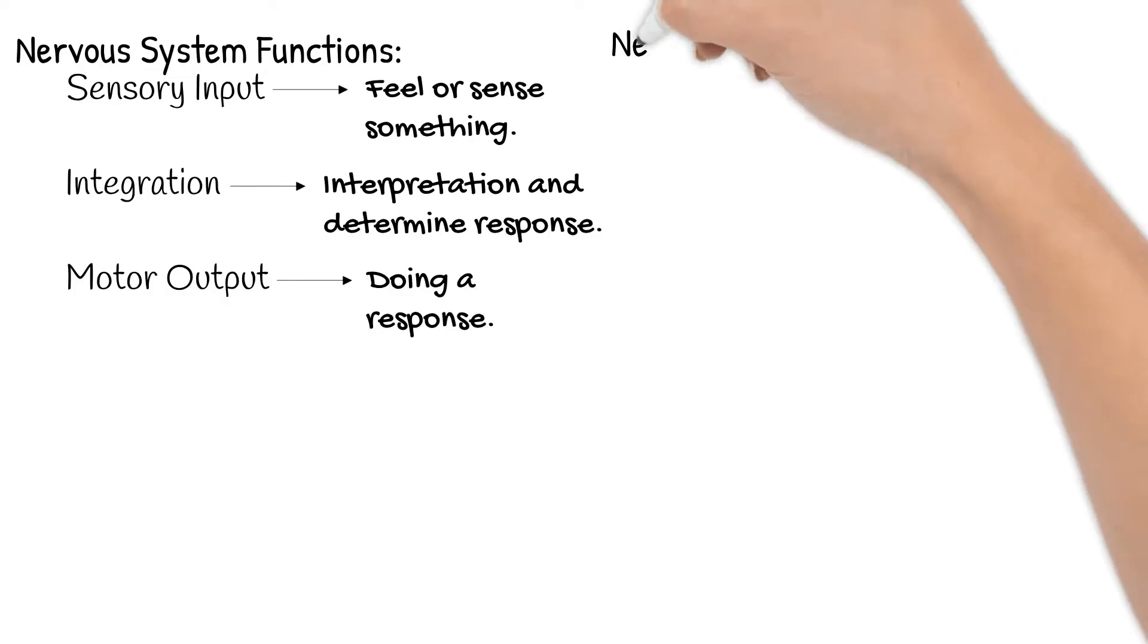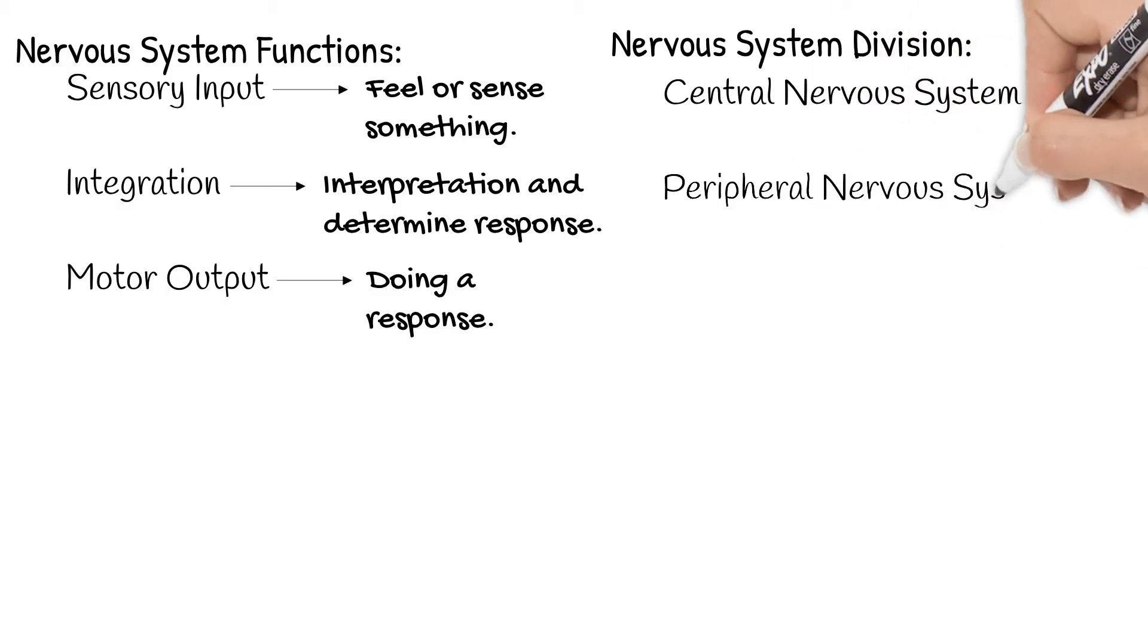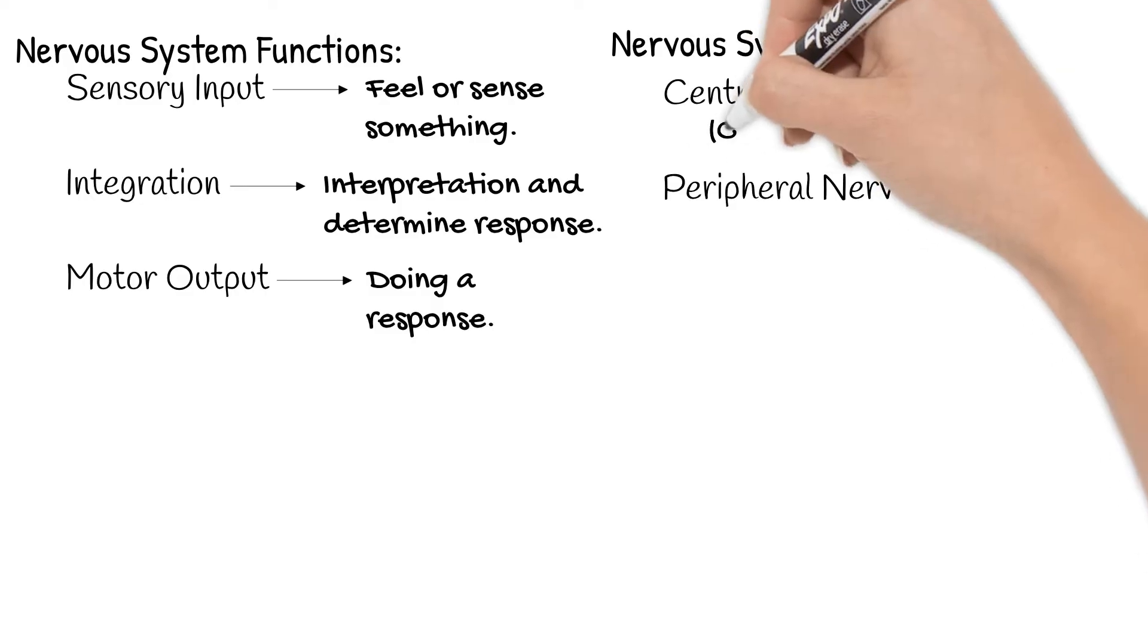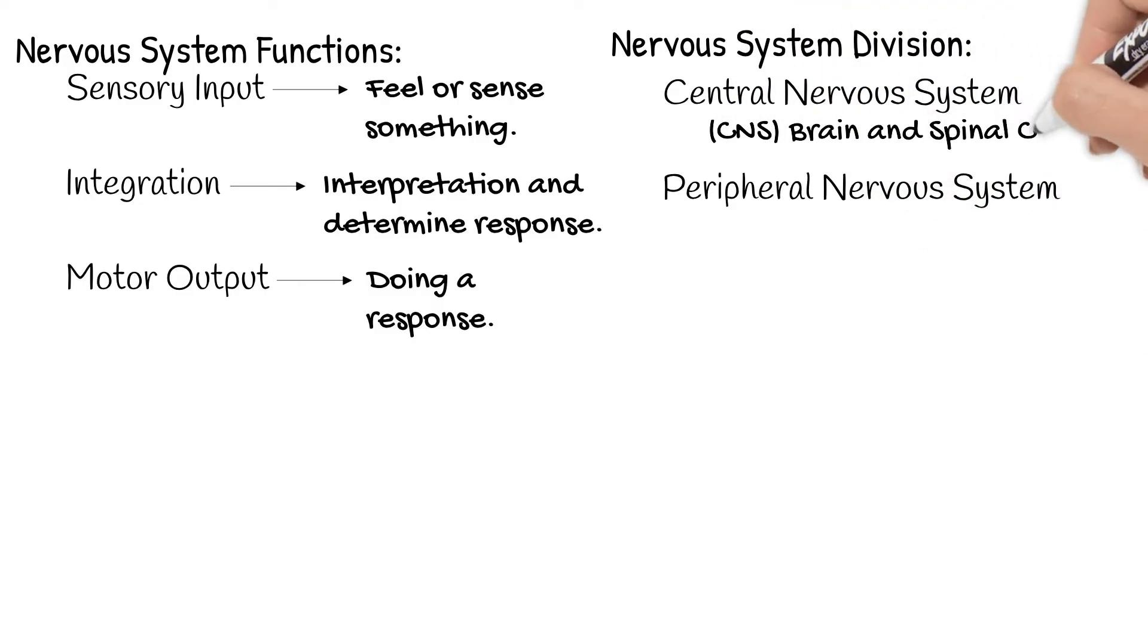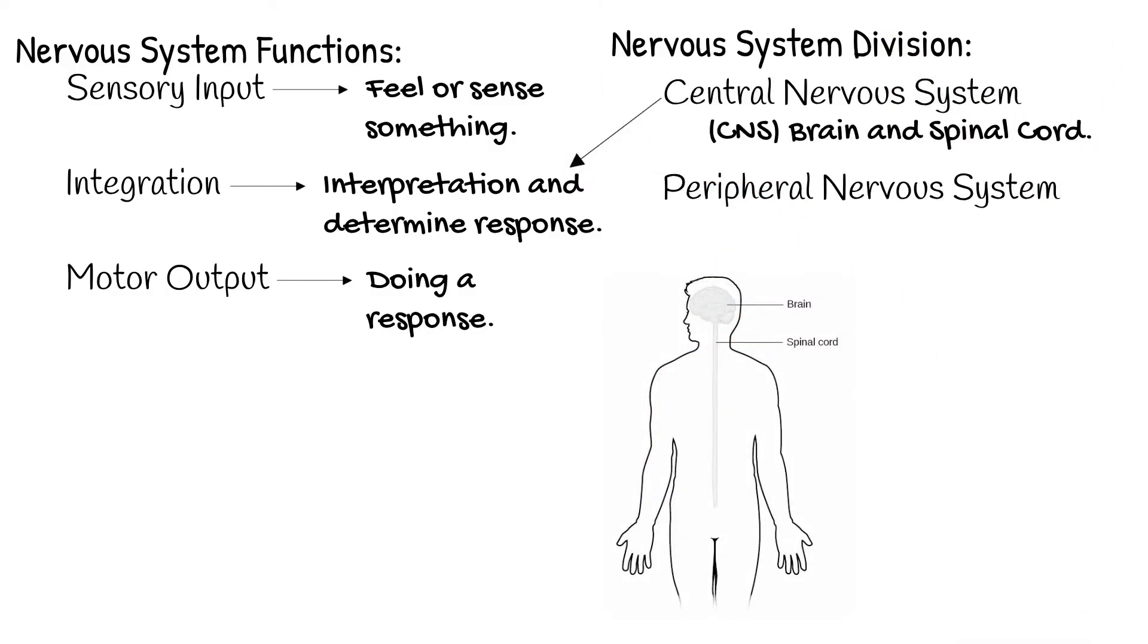There are two main divisions in the nervous system: the central nervous system and the peripheral nervous system. The central nervous system, or CNS, includes the brain and spinal cord. This is where integration happens.